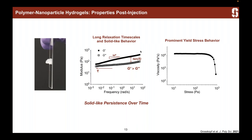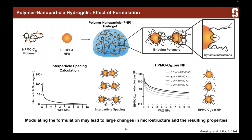We also characterize the yield stress — meaning how much the material has to resist before it will flow. We want a yield stress so that the material forms a depot once injected and doesn't just dissipate into the body, but stays as a solid-like material. So I dove into what's really driving gel formation and whether we can understand more about the optimal formulations to make a very robust physical hydrogel.